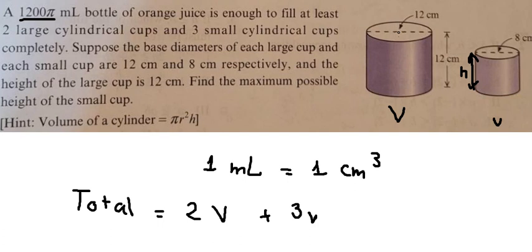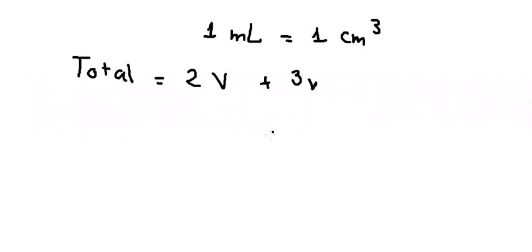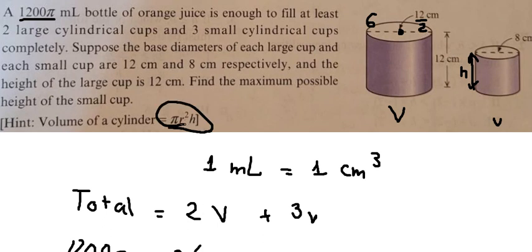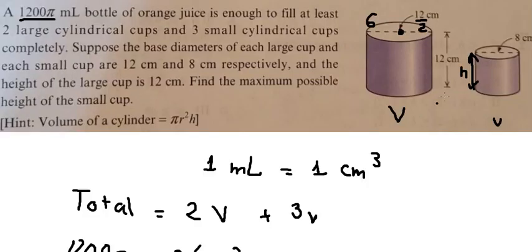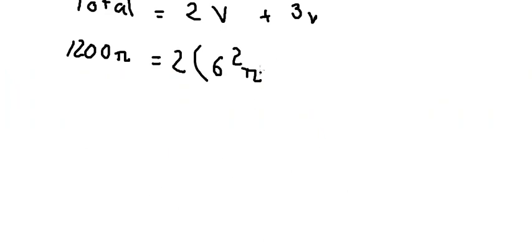We know the diameter is 12, so the radius is 12 divided by 2, which gives us 6. We apply the volume formula, and the height is 12.